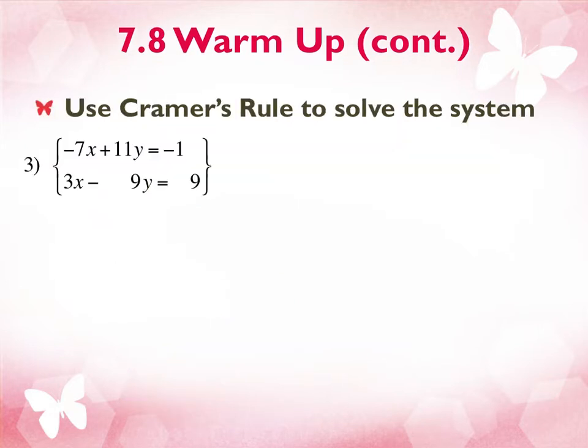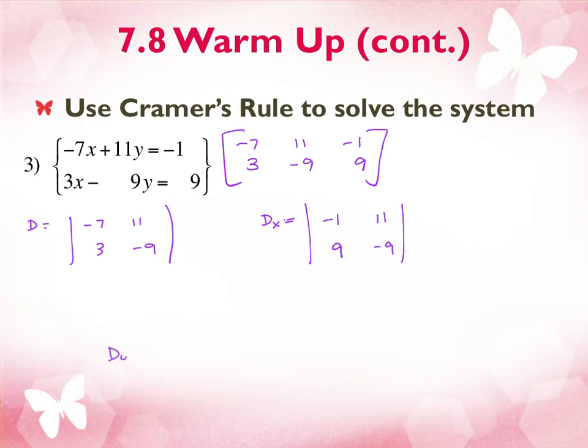Questions on that one? Okay. Same Cramer's rule with two variables. So I'm going to rewrite my system, negative 7, 11, negative 1, and 3, negative 9, 9 as an augmented matrix. I'm going to find D first, which is the x's and the y's, negative 7, 11, 3, negative 9. Then I'm going to find D sub x, take out the x's and put in the constants, negative 1, 9, and 11, negative 9. And then I'm going to find D sub y. This time the x's stay. I take out the y's and put the constants.